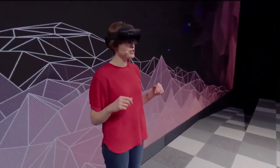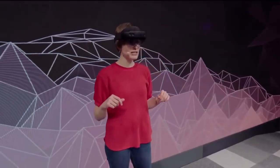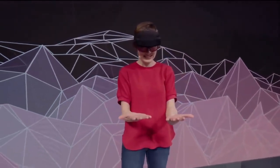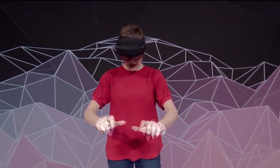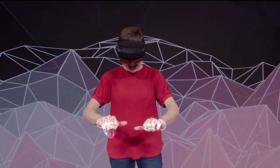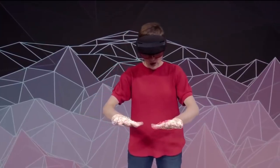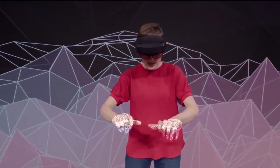Now, not only does the HoloLens 2 recognize me, it also recognizes my hands. Look at this. Fully articulated hand tracking. And as I move my hands around, the HoloLens 2 is actually calibrating to my unique hand size.